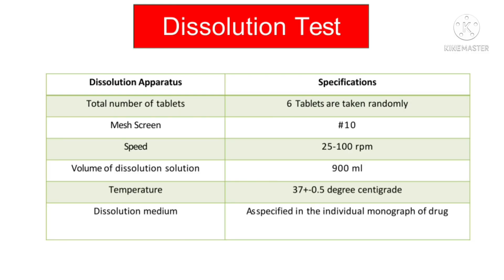Hello friends, welcome back to the Industrial Pharmacy series. Our today's topic is the Dissolution Test of Tablet. The apparatus consists of a cylindrical vessel of suitable glass or other transparent material with a hemispherical bottom and a nominal capacity of 900 ml. The vessel is covered to prevent evaporation of the medium, with a cover that has a central hole.